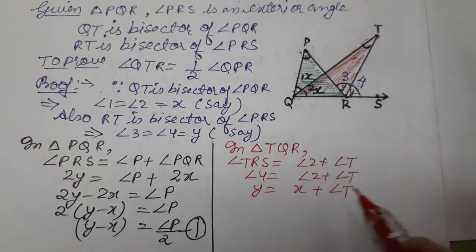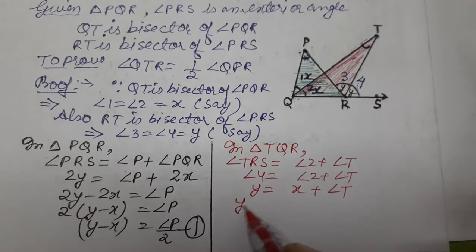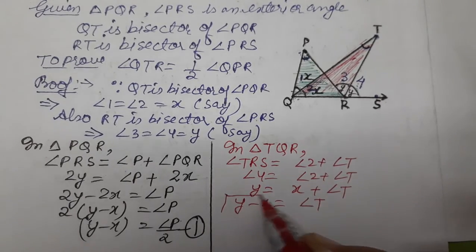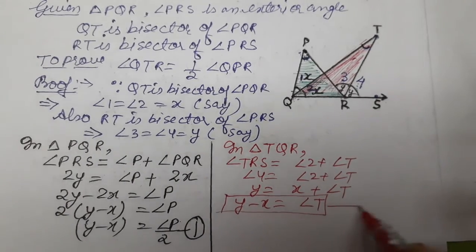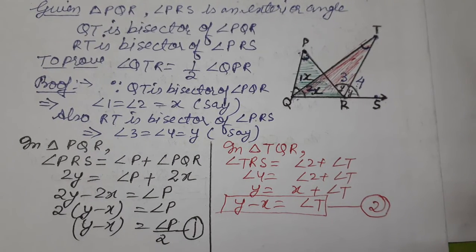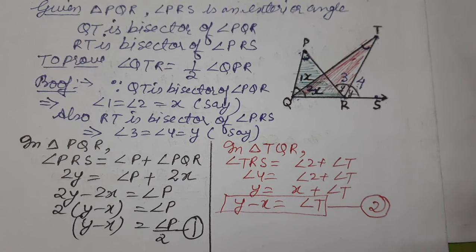Angle 2 we assumed as x, plus angle T. Taking x to the other side, y minus x equals angle T. This is our equation number 2.